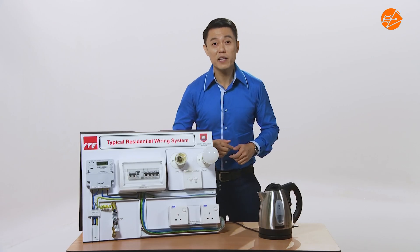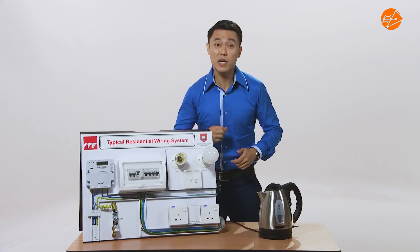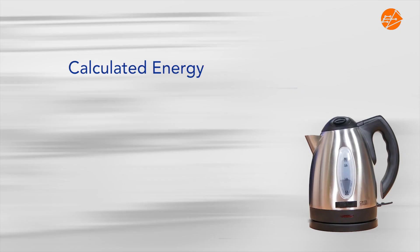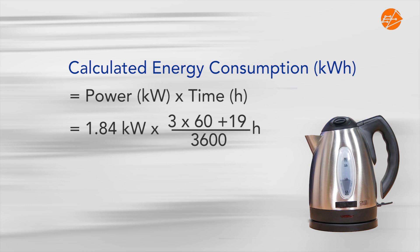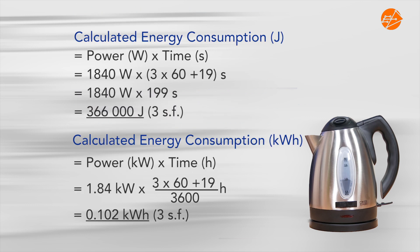Notice that calculating energy consumption in joules gives us a very large value to handle. For practical purposes, we usually calculate energy consumption in kilowatt hours. The energy consumption in kilowatt hours is calculated as power in kilowatts multiplied by time in hours. This gives a value of 0.102 kilowatt hour. Calculating in kilowatt hours gives us a much smaller value that is easier to compute.